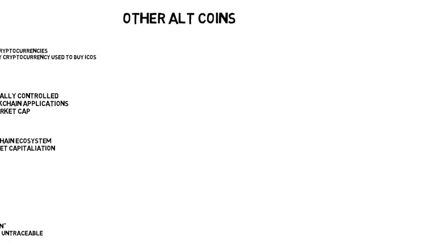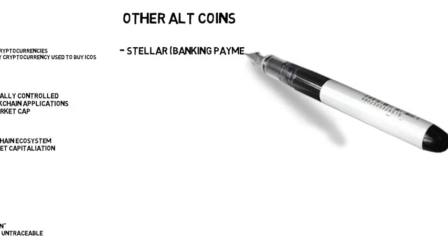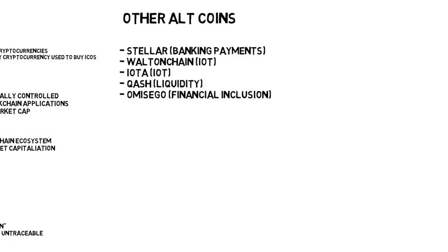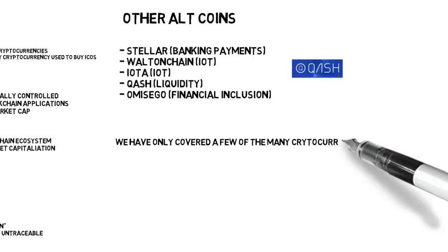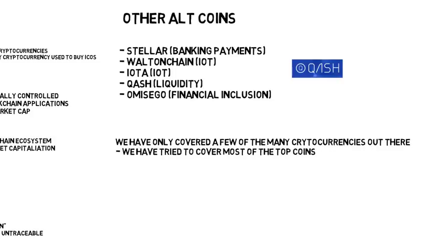There are other altcoins as well. Stellar is for banking payments. There is Waltonchain, which has become popular for Internet of Things. IOTA, which is again for the Internet of Things. Quash, which is for liquidity. And OmiseGO, which is for financial inclusion and becoming quite popular. I cannot cover all the coins in this video — there are probably over 1,500 different cryptocurrencies currently. But you can look at those on CoinMarketCap. I've tried to cover some of the top coins, probably the top 20–25, and certainly the top 10, so you can get an idea of what the different types of cryptocurrency are and what they're used for.